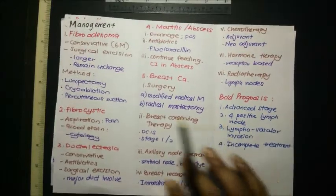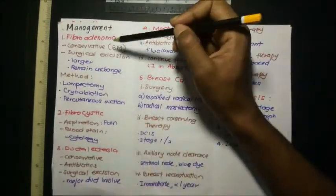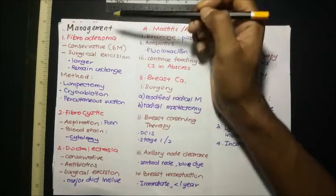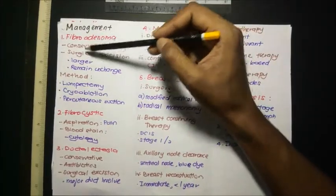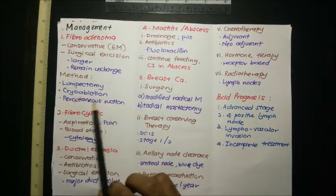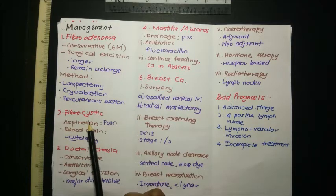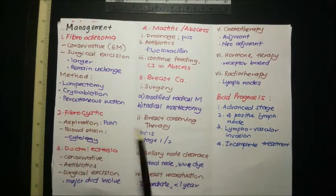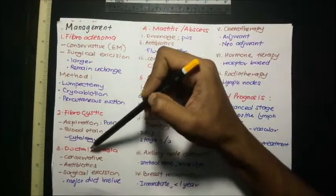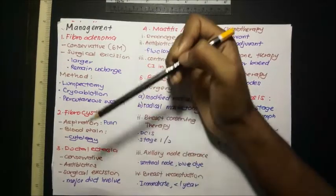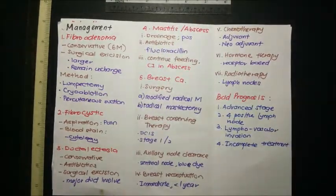For management: fibroadenoma is managed conservatively with six-month follow-up. If it enlarges or remains unchanged, surgery is done — options include lumpectomy, cryoablation, or percutaneous suction. For fibrocystic disease, aspirate the fluid if pain is present; if blood-stained fluid is obtained on aspiration, send for cytology. For ductal ectasia, conservative treatment with antibiotics; if a major duct is involved, surgical excision is performed.